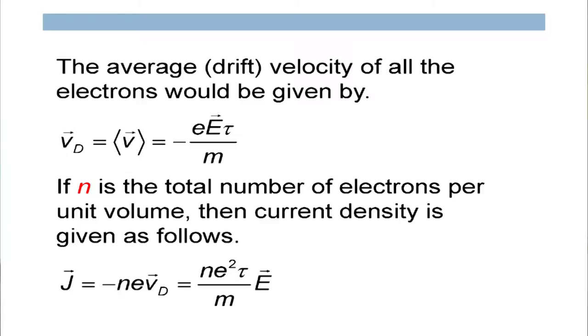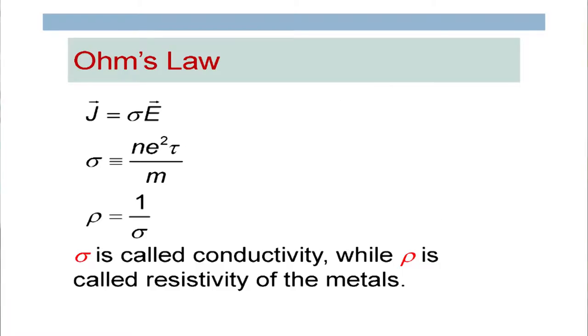If there are n electrons per unit volume, the current density is j = −ne × v_d. Substituting the drift velocity expression, it becomes j = (ne²τ/m)E. So ne²τ/m is called the conductivity σ of the material, giving j = σE, where σ = ne²τ/m. The resistivity of the material is 1/σ. This expression is nothing but Ohm's law.